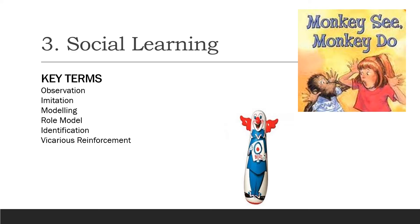The third key concept is social learning theory. The key terms are: observation, imitation, modelling, role model, identification, and vicarious reinforcement. Observation is watching another individual perform a behaviour. Imitation is copying that behaviour. Modelling is when an individual shows another how to perform a certain behaviour. A role model is someone we look up to or want to be like. Identification is seeing similarities between yourself and someone performing a behaviour — more likely if they are the same gender or a family member such as a sibling or parent.